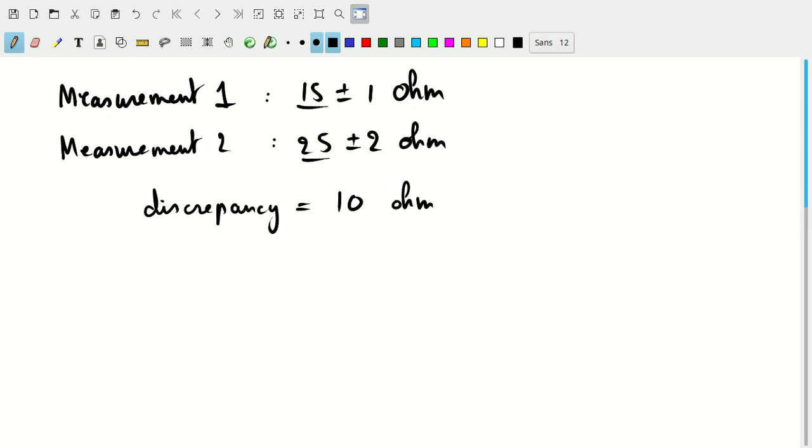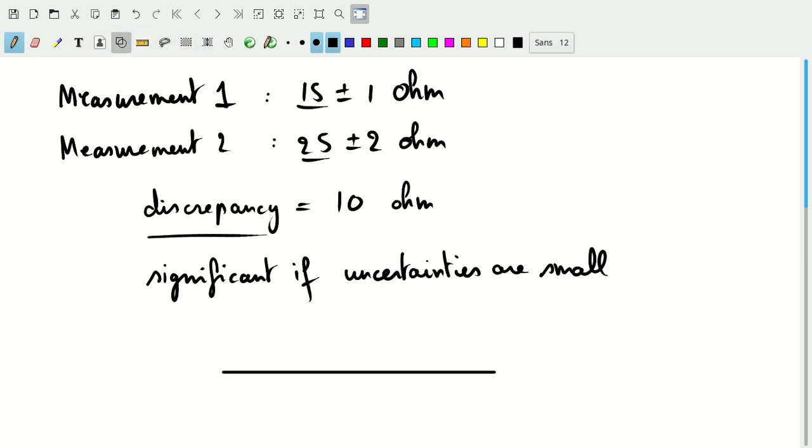So the question now is what to do with this discrepancy. The discrepancy can be significant if the uncertainties are small. You can see how this goes here if we think of the two measurements.